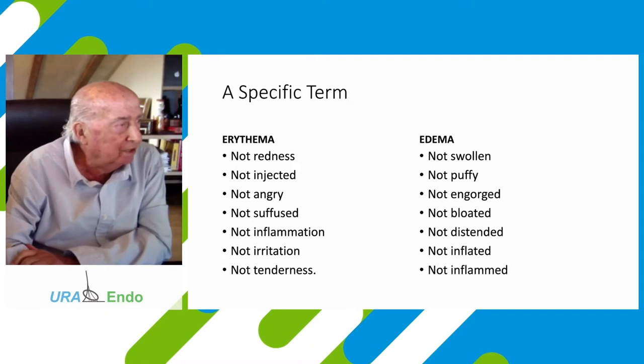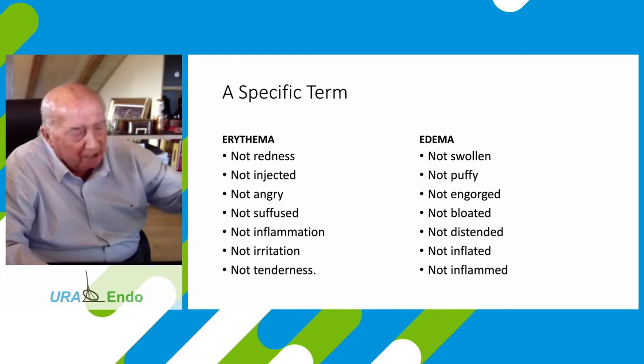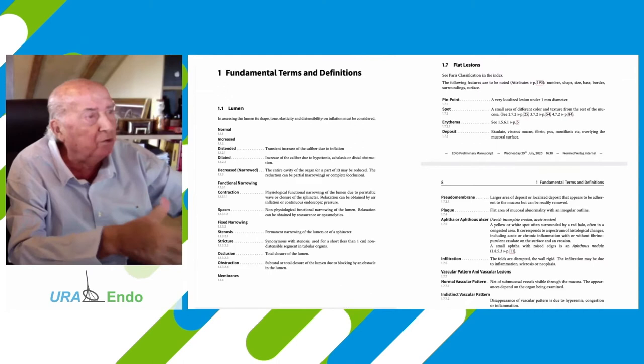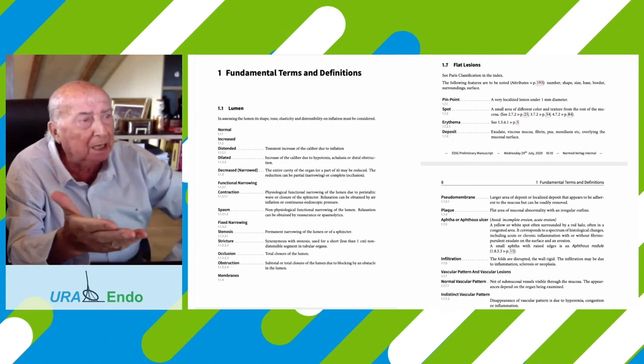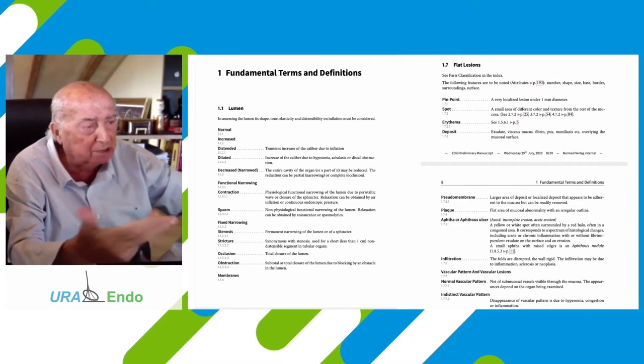This is the discussion of the terms erythema and edema. Sometimes in meetings, three hours are spent discussing what is erythema and what is edema, but finally good definitions are reached. This covers the fundamental terms and definitions — many words — including infiltration, vascular pattern, indistinct vascular pattern, membranes, plaques, and aphtas. Some examples are shown in the book.